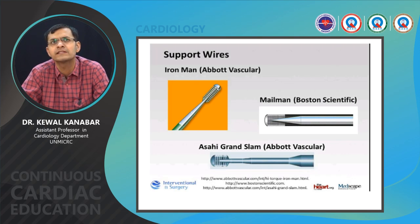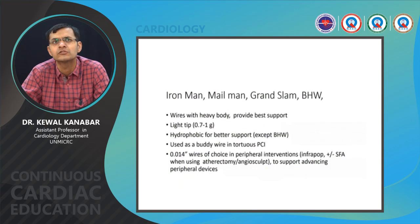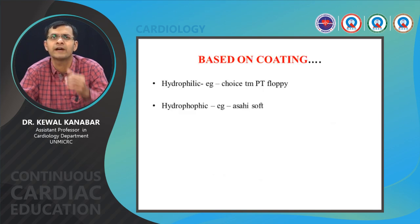Super extra support wires commonly used are the Iron Man wire and Grand Slam wire — very high support wires offering the most possible support for passage of balloons and stents. They have a heavy body, best support, a tip load of around 1 gram, are hydrophobic for better support, usually used as buddy wires in tortuous PCI, and are 0.014 wires. They are also used in infrapopliteal disease for passage of balloons and stents.